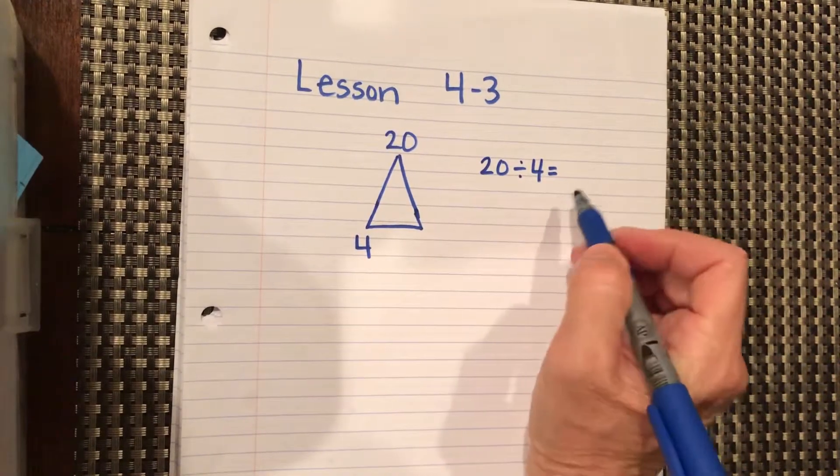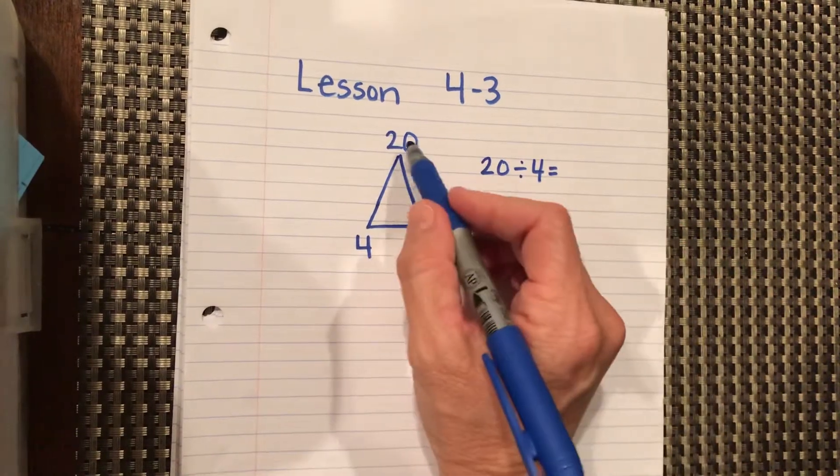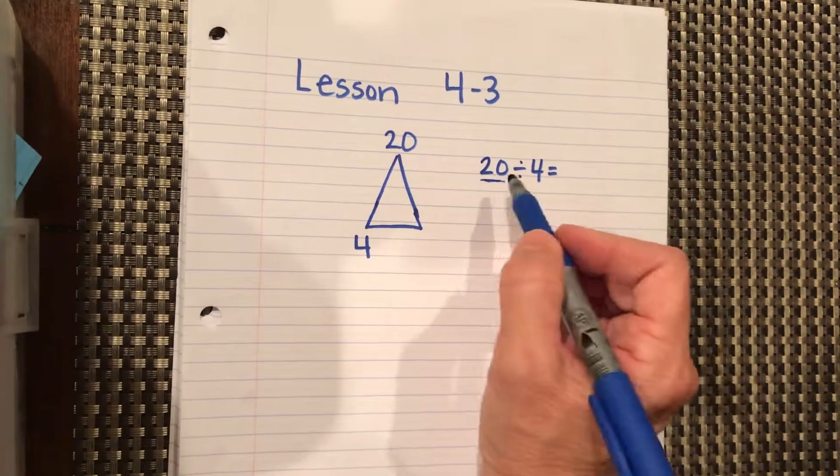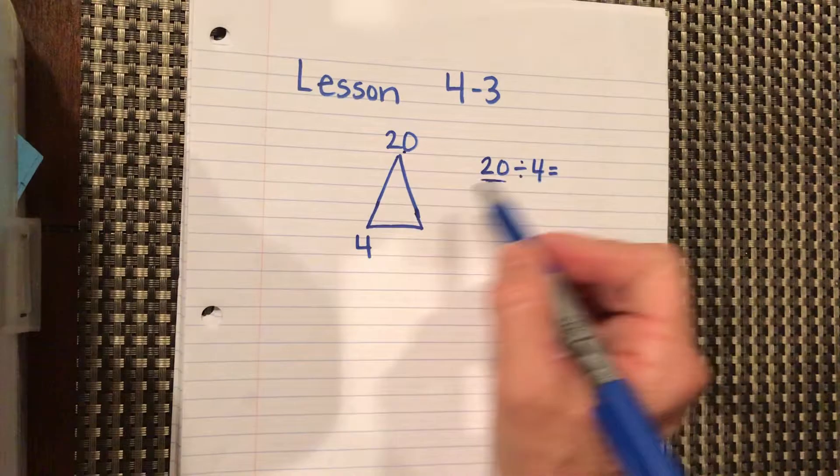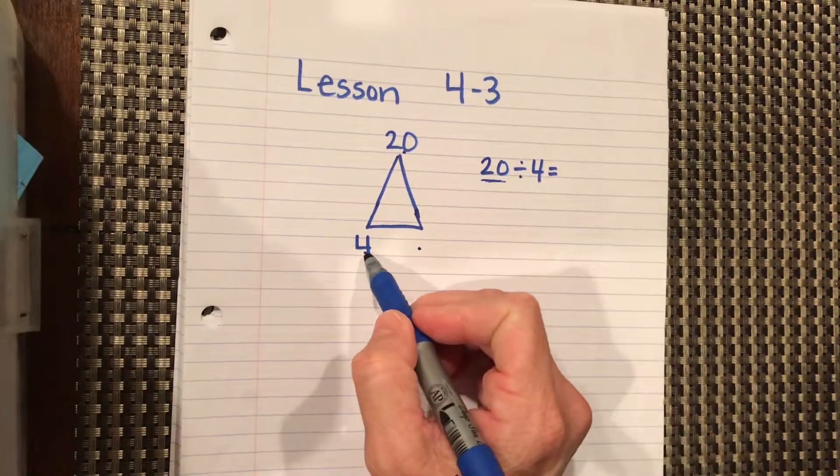What is 20 divided by 4? We have to think to ourselves, our biggest number in the division problem, the first one, goes at the top. Then we have our two multiplication facts on the bottom.